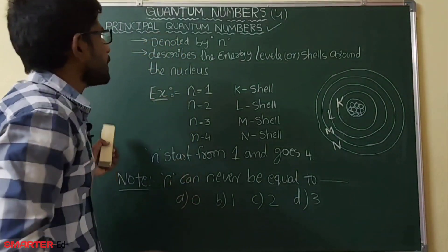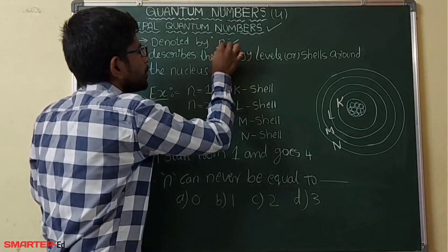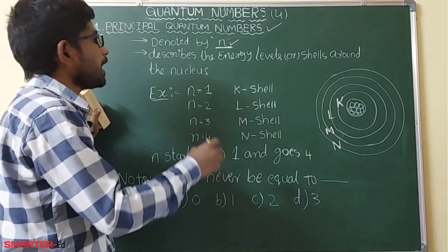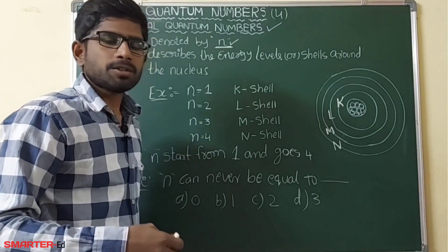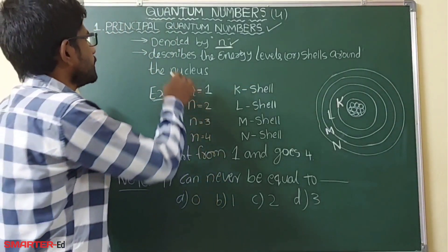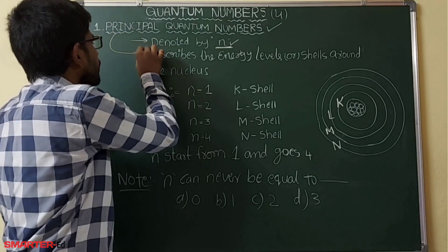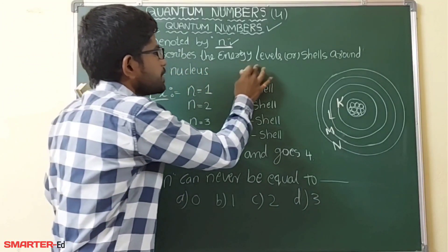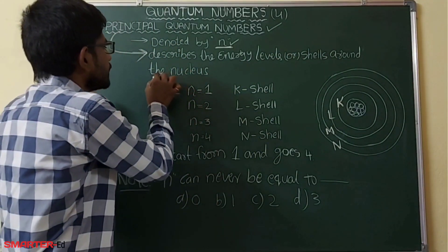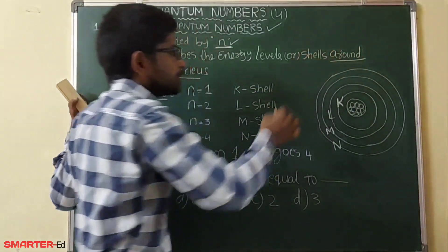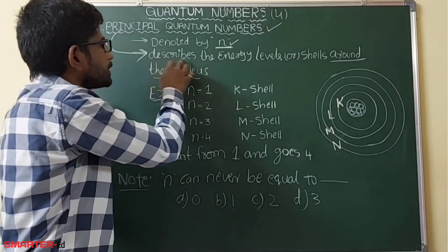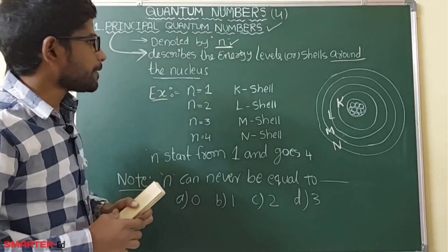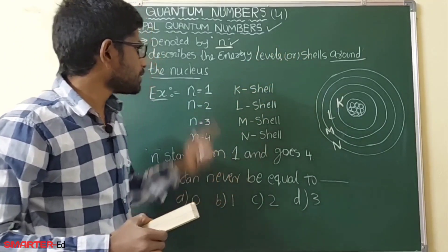The principal quantum number is denoted by small n. This quantum number describes the energy levels or shells around the nucleus.